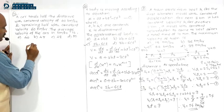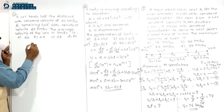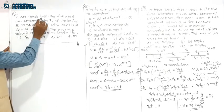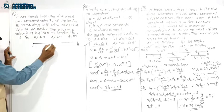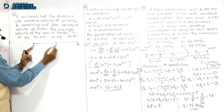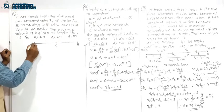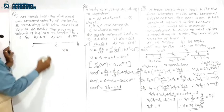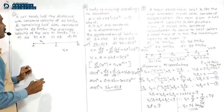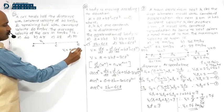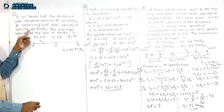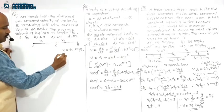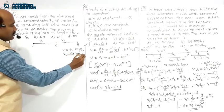Let A be the starting position and B the final position. C is the midpoint. A to C is the first half distance covered with velocity V1 = 40 km/hr; C to B is the remaining half distance covered with velocity V2 = 60 km/hr.